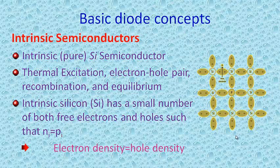The basic diode concepts. First, intrinsic semiconductor: intrinsic semiconductors are crystals of pure elements like germanium and silicon. The number density of electrons is equal to the hole density. The electrical conductivity of an intrinsic semiconductor is low, and it depends on temperature. At equilibrium condition, the hole density is equal to the electron density.